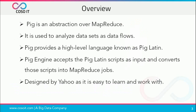Pig is an abstraction over MapReduce. Pig runs on Hadoop, so it makes use of both the Hadoop Distributed File System, HDFS, and Hadoop's processing system, MapReduce. Pig provides an engine for executing data flows in parallel on Hadoop. It's used to analyze data sets as data flows.